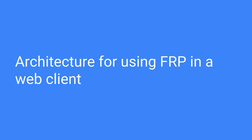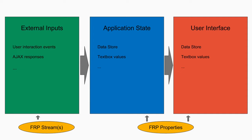Now let's look at how you can use FRP to build the user interface part of a web application. At a very high level, your external inputs are represented as streams. From those, you derive a single unified application state — one object with sub-objects representing your entire state: the value of every text box, all cached data, everything that can change in your front-end. And from that state, you derive your user interface, which is represented using virtual DOM or something similar. Typically your inputs are streams, and your state and UI are properties.